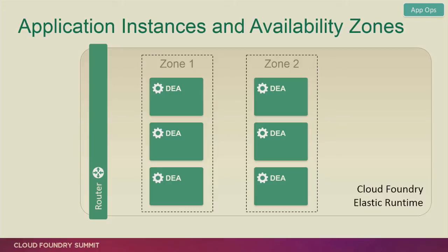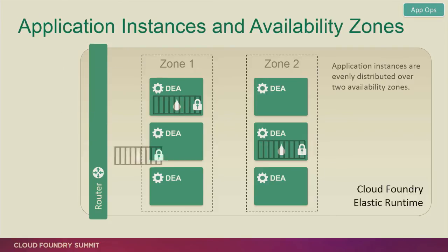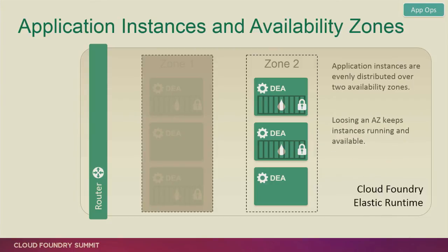Number one: availability zones. When you deploy the Cloud Foundry Elastic Runtime, you can deploy the DEAs across different availability zones. When your users deploy applications to the PaaS, that application, when you have more than one instance, will be evenly distributed across those availability zones — we take care of that for you in the PaaS. If one of those availability zones goes down, you've still got application instances that are serving traffic. That's number one.